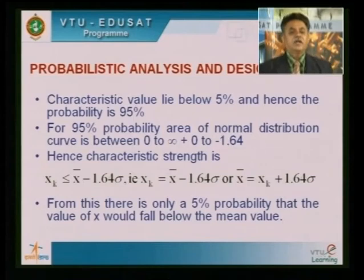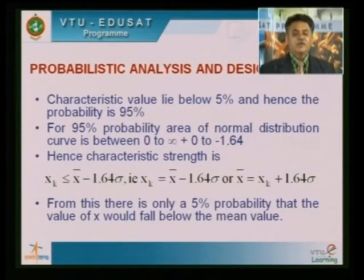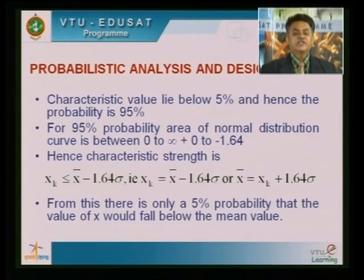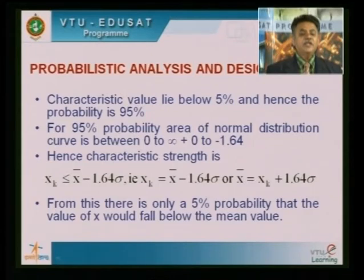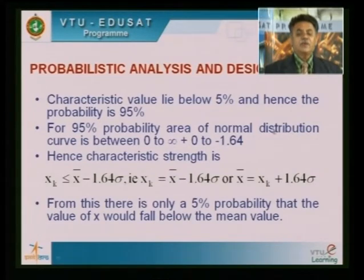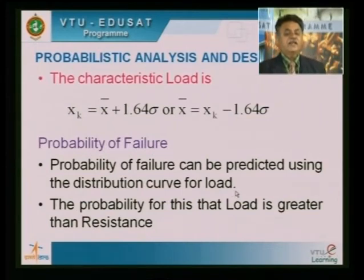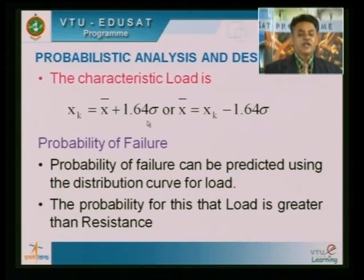Using this concept, I define the characteristic value. The characteristic value is the one where the probability of occurrence is 95 percent and only 5 percent lies outside. For this we get z = 1.64. Hence, the characteristic strength of a material is defined as: Xk = X-bar − 1.64 × sigma. For material we use a minus sign; for load we use a plus sign. The characteristic load is calculated as X-bar + 1.64 × sigma.